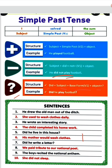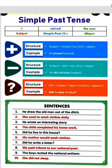Let's see some more examples. He drew the old man out of the ditch — 'he' is subject, 'drew' is verb का second form, rest is object. She used to wash clothes — 'she' is subject, 'used' is verb का second form, 'to wash clothes' is object. He wrote an interesting story. The child completed his homework.